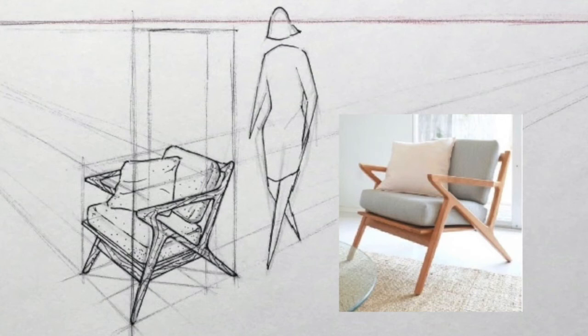Through keen observation, she noticed that the back of the chair and the back legs lined up, so she invented a box back there and managed to get everything to work out just the way she interpreted her reference picture.